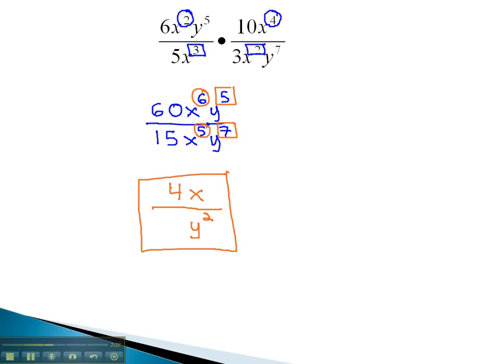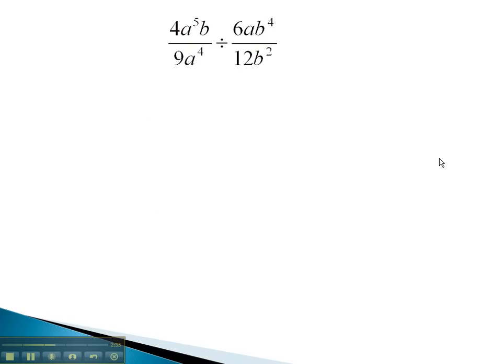Let's take a look at another example, where we use our exponent properties to help us simplify an expression that has no adding or subtracting. In this problem, we are dividing. This means we will have to multiply by the reciprocal.